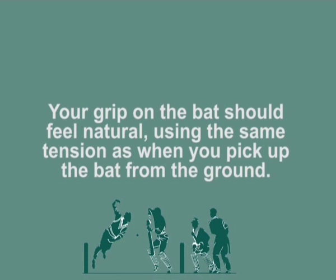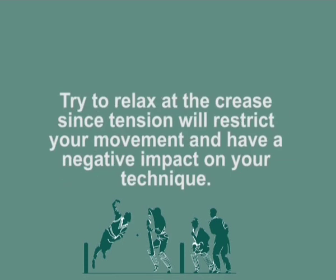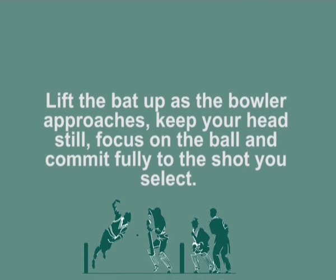Bob Woolmer, former head coach of the South African cricket team, wrote in The Art and Science of Cricket that batting has five basic principles: watch the ball, keep your head still on the release of the ball, judge length accurately, allow your hands to lead your body and feet into the correct position, and select the correct shot. Your grip on the bat should feel natural. Try to relax at the crease since tension will restrict your movement and have a negative impact on your technique. Lift the bat up as the bowler approaches, keep your head still, focus on the ball, and commit fully to the shot you select.